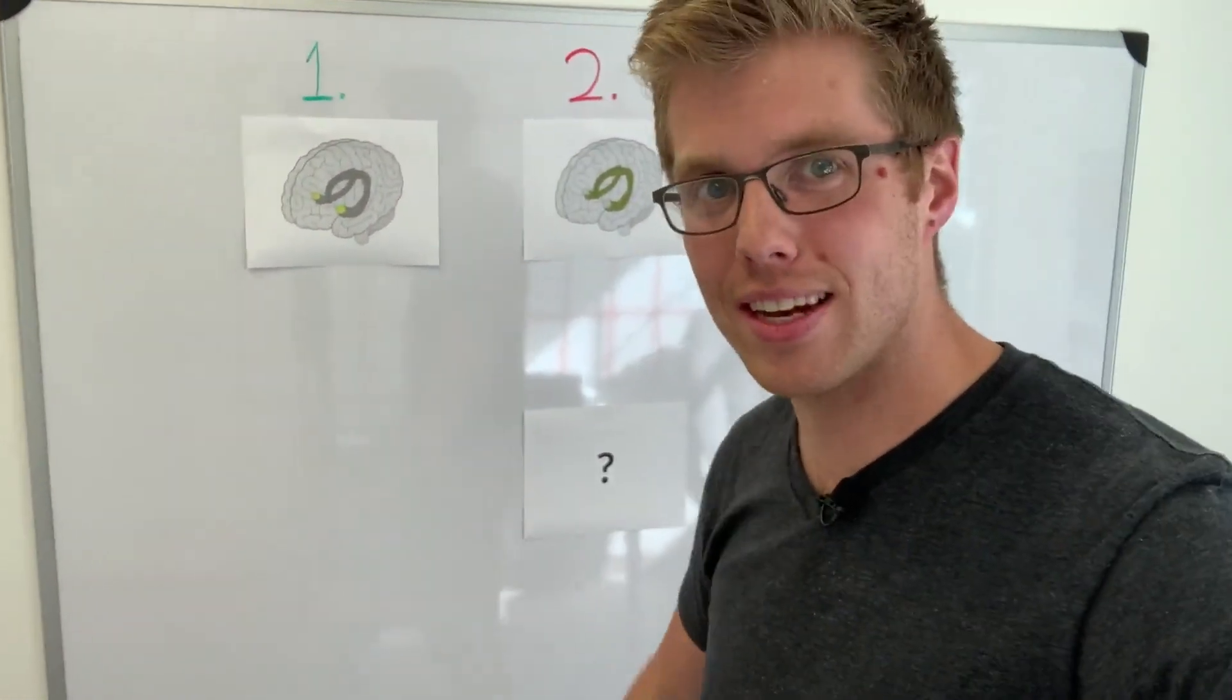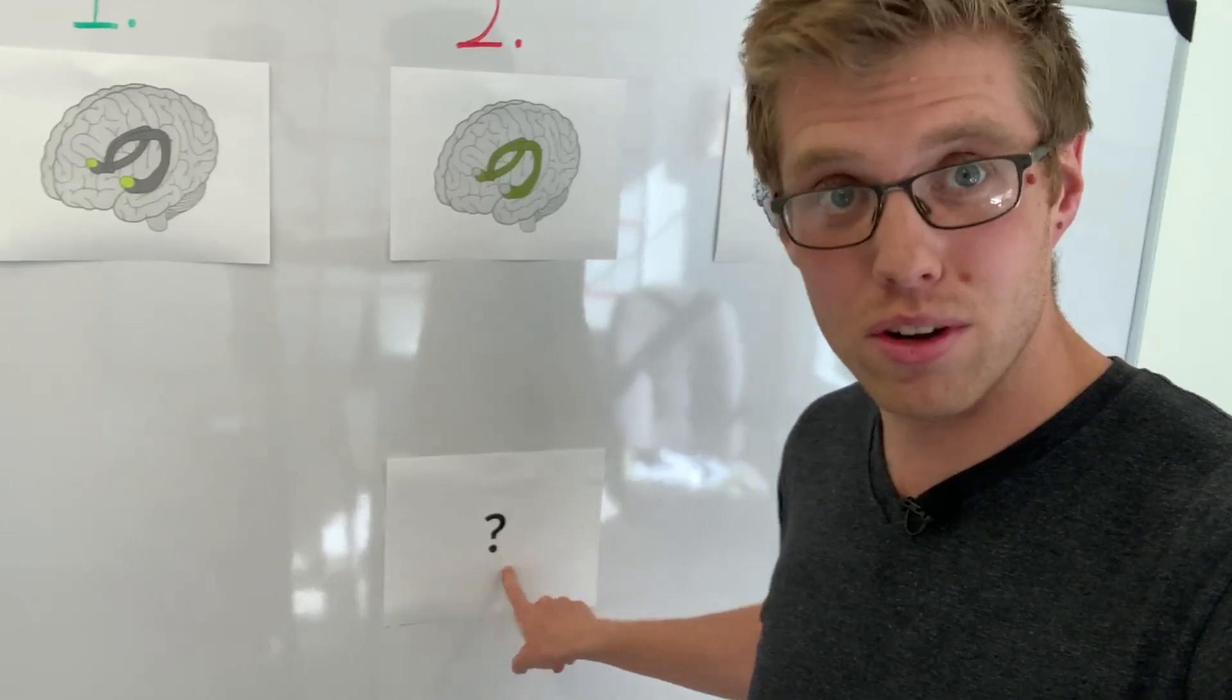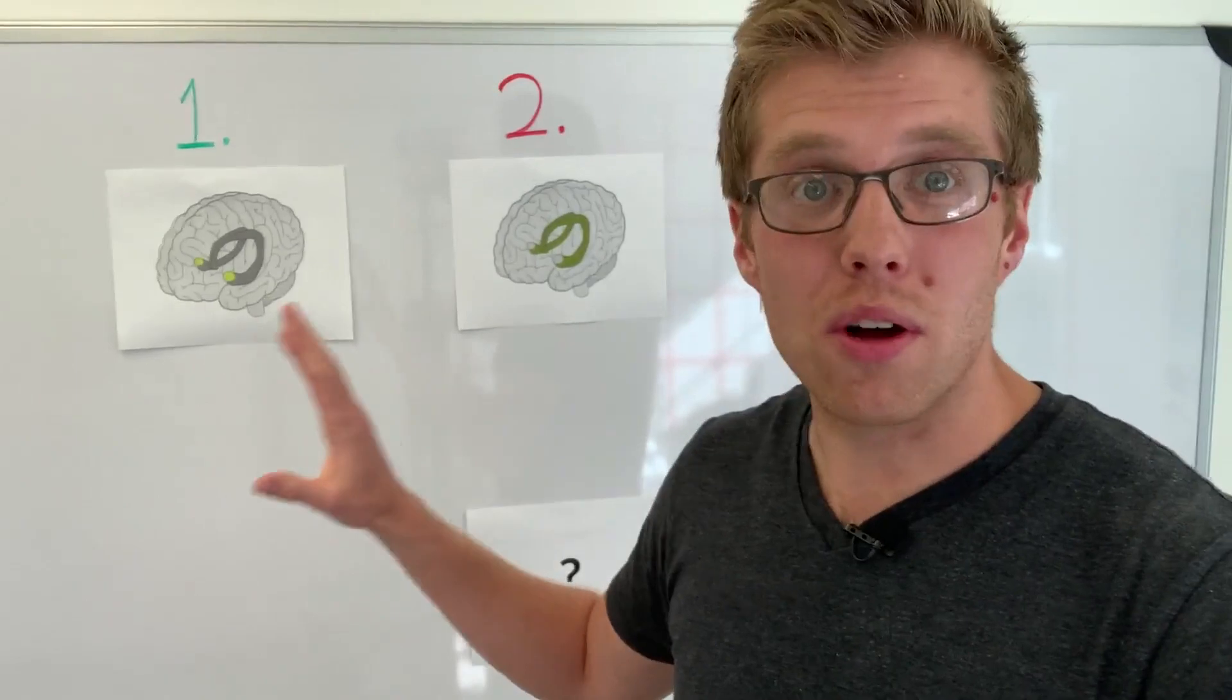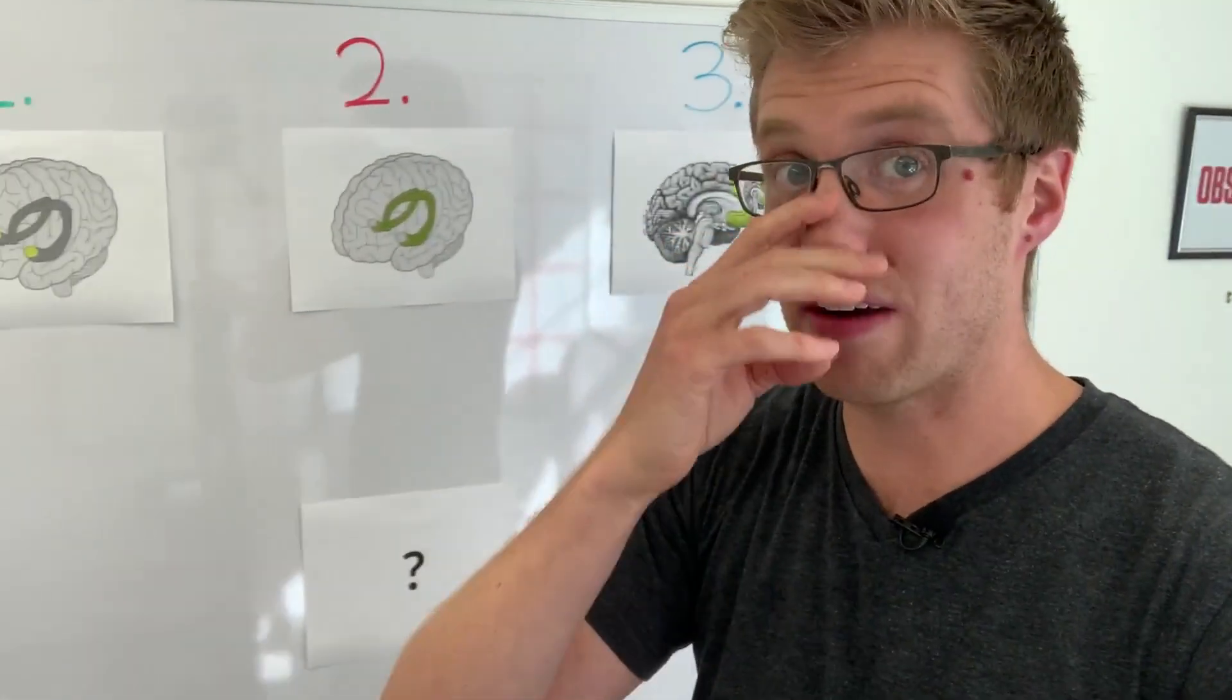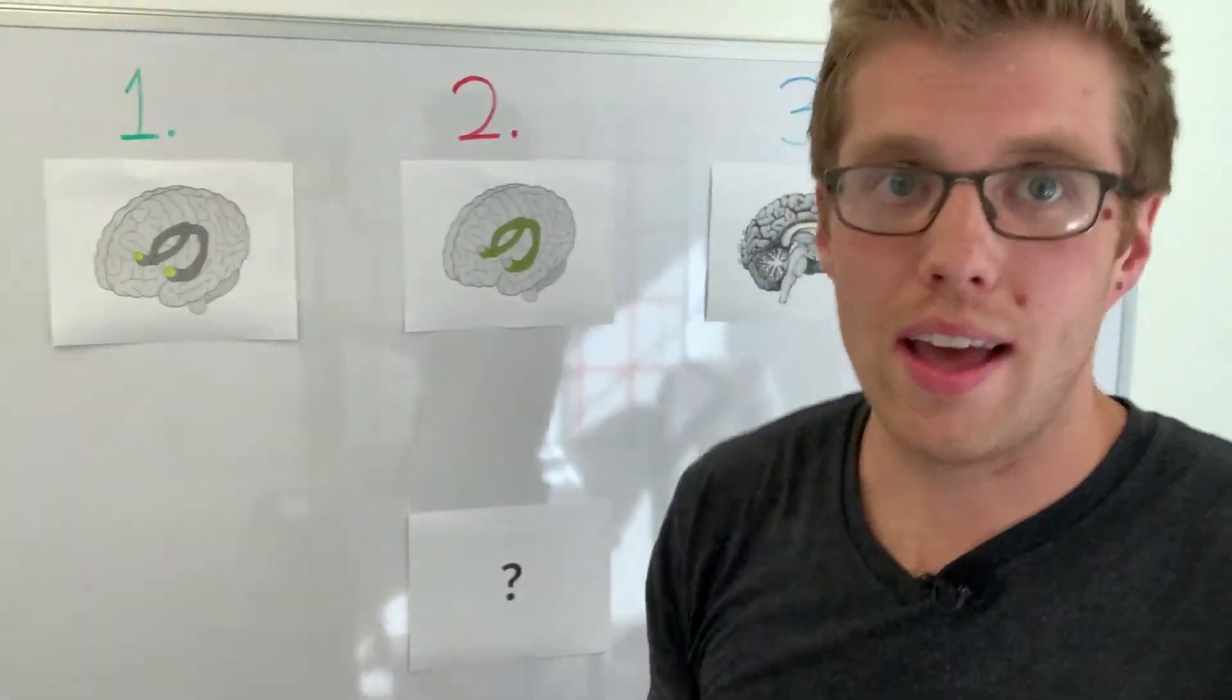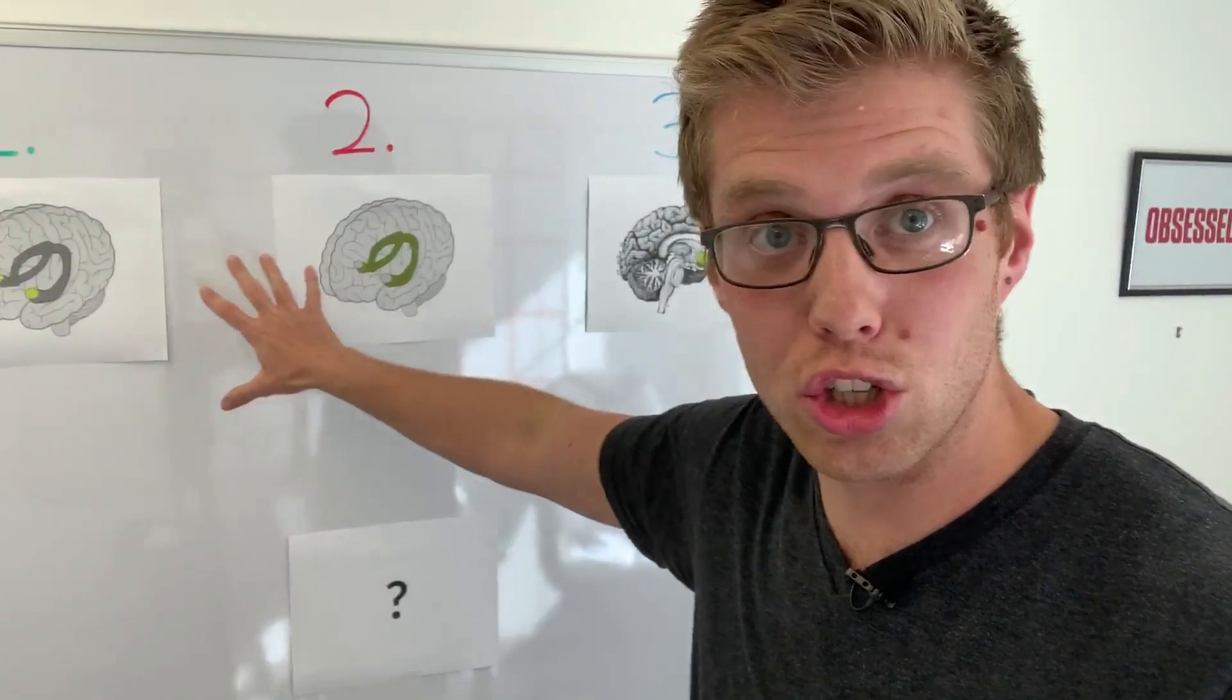So I have three ways up here on the board. I have three parts of the brain that I'm going to talk about today. Now, there are a lot of ways that trauma affects the brain, but I'm going to talk about the three main ones. And if you stay to the end, I actually have a little secret down here. I have a little question mark down there. That's a secret for you, for the end of this video.